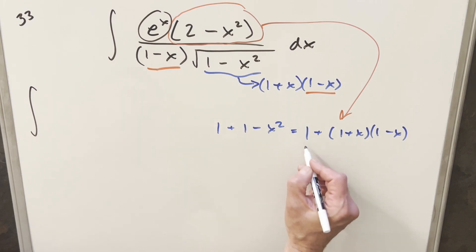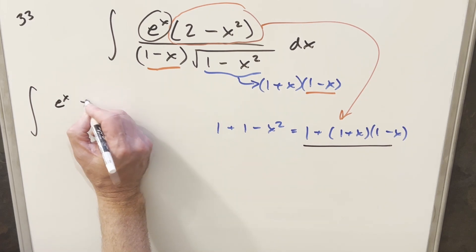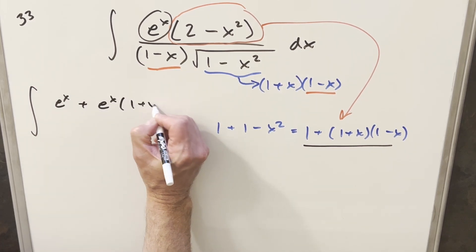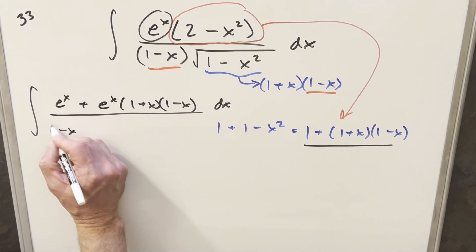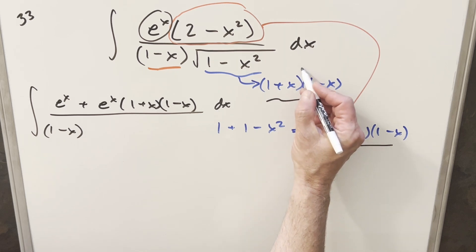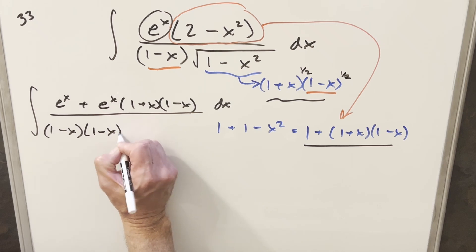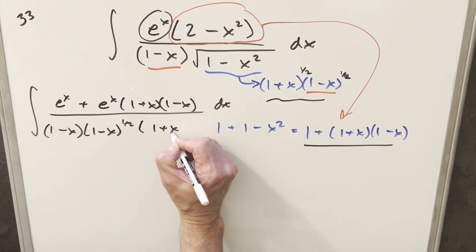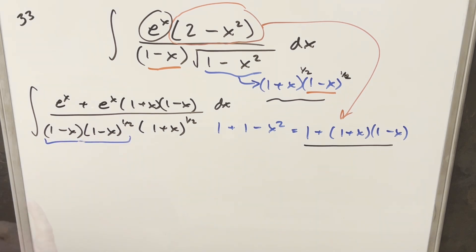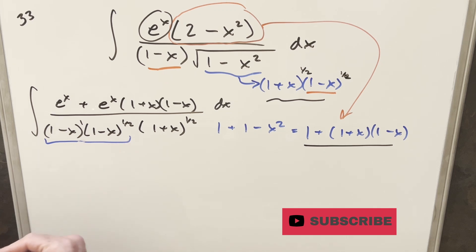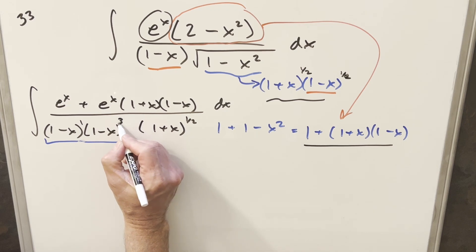Let's take the e to the x and distribute it into this right here. For the first piece it's going to be e to the x. Distributing into the second part, we're going to have plus e to the x times 1 plus x times 1 minus x. In the denominator we've got this piece, 1 minus x. For the radical, let's use 1 half powers. Rearranging, I'm going to move over the 1 minus x, so we have 1 minus x to the 1 half, and this becomes 1 plus x to the 1 half. Then multiplying 1 minus x to the first times 1 minus x to the 1 half, we can write this as 3 halves.